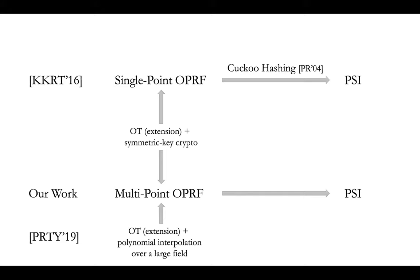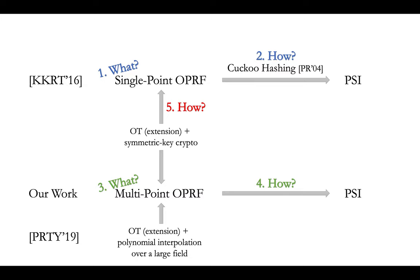As a side note, the work of PRTY also follows the same paradigm, but they constructed multi-point OPRF from OT extension and polynomial interpolation over a large field, and that's why they are computationally much more expensive. In the remaining of the talk, I will first tell you what is single-point OPRF and how to construct PSI from single-point OPRF using Cuckoo hashing, and then what is multi-point OPRF and how to construct PSI from multi-point OPRF. Then I will briefly talk about how to construct single-point OPRF from OT extension and symmetric key crypto operations, and how to generalize these ideas to achieve multi-point OPRF.